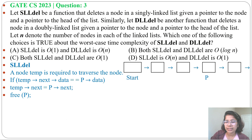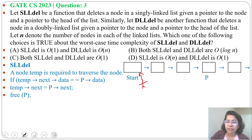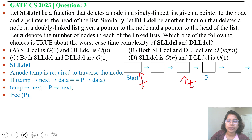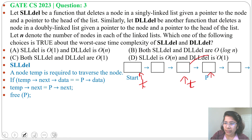Suppose this is a single linked list. Initially, temp is pointing to the head of the linked list. Now it will traverse. When it reaches here, temp is pointing to the predecessor node of p. So there are two pointers — one pointer pointing to the head of the list and another pointing to the node that we want to delete. Now we can update the next pointer of temp: temp's next will be p's next, and we can free p.